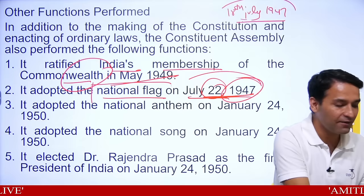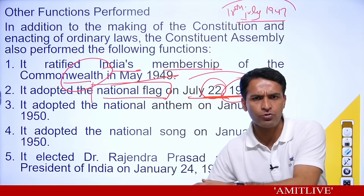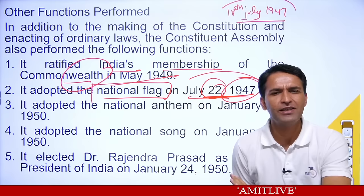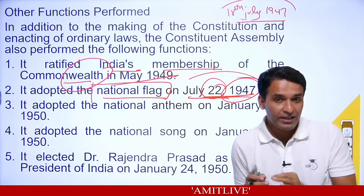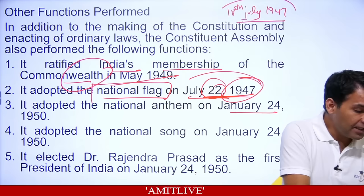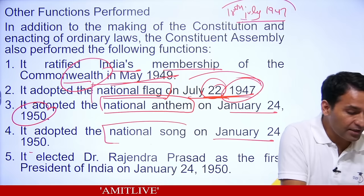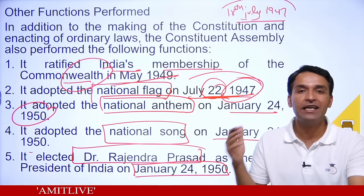Then they made the constitution, which was ready on 26th November 1949. The plan was to sign it on 26th January and start it from 1950 — an auspicious day. So on 24th January 1950, they adopted the National Anthem; on 24th January 1950, they adopted the National Song; and on 24th January 1950, Dr. Rajendra Prasad was also elected as President.